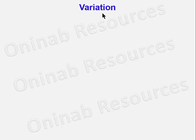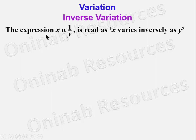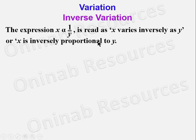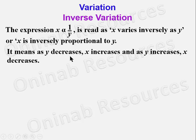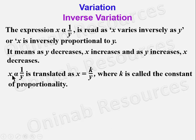Hello, welcome to this tutorial on variation. In this video we'll be looking at inverse variation. The expression x α 1/y is read as 'x varies inversely as y' or 'x is inversely proportional to y.' It means as y decreases x increases, and as y increases x decreases. x α 1/y is translated as x = k/y, where k is called the constant of proportionality or constant of variation.